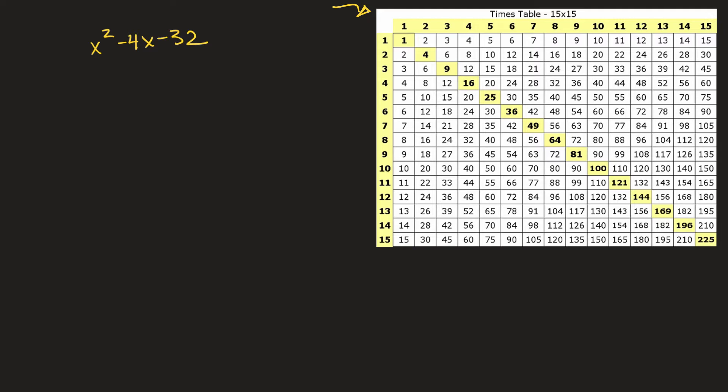So here's a question where I'm asked to factor. And so if there's no number out front here, or there's a one there, but if there's not a number other than one there, what I'm looking for are two numbers that multiply to negative 32, and they add to a negative 4. So those same two numbers, they multiply to negative 32, and they add to a negative 4.